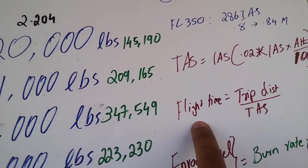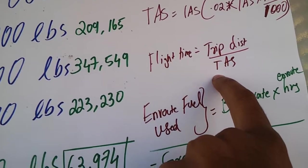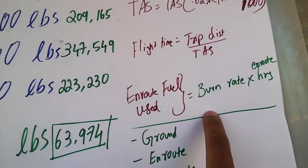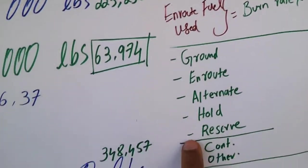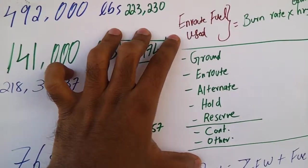The next formula that I have mentioned here is flight time is distance divided by true airspeed, not indicated airspeed. Enroute fuel used is burn rate times the enroute hours, and this is the fuel that we should carry.